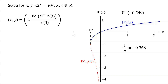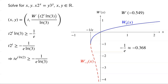Since the Lambert W function is real-valued only when its argument is greater than or equal to −1/e, for W to be real-valued, t times 2^t times ln(3) must be greater than or equal to −1/e. Since ln(3) is greater than 0, dividing the inequality by ln(3) does not change the sign, giving t times 2^t ≥ −1/(e times ln(3)). Writing 2^t as e^(t times ln(2)) and multiplying by ln(2), we get t times ln(2) times e^(t times ln(2)) ≥ −ln(2) / (e times ln(3)).